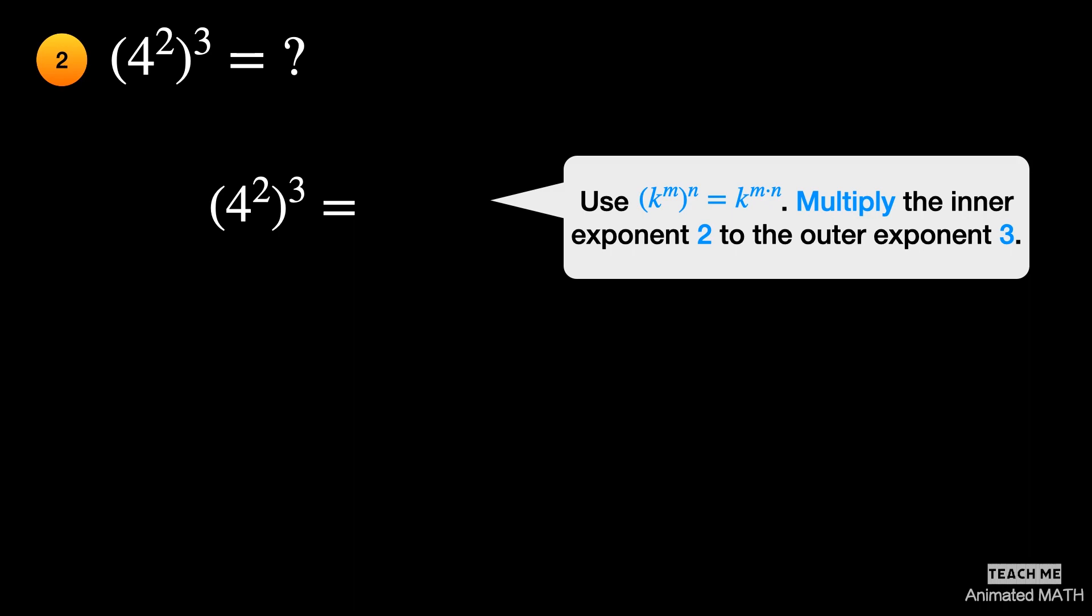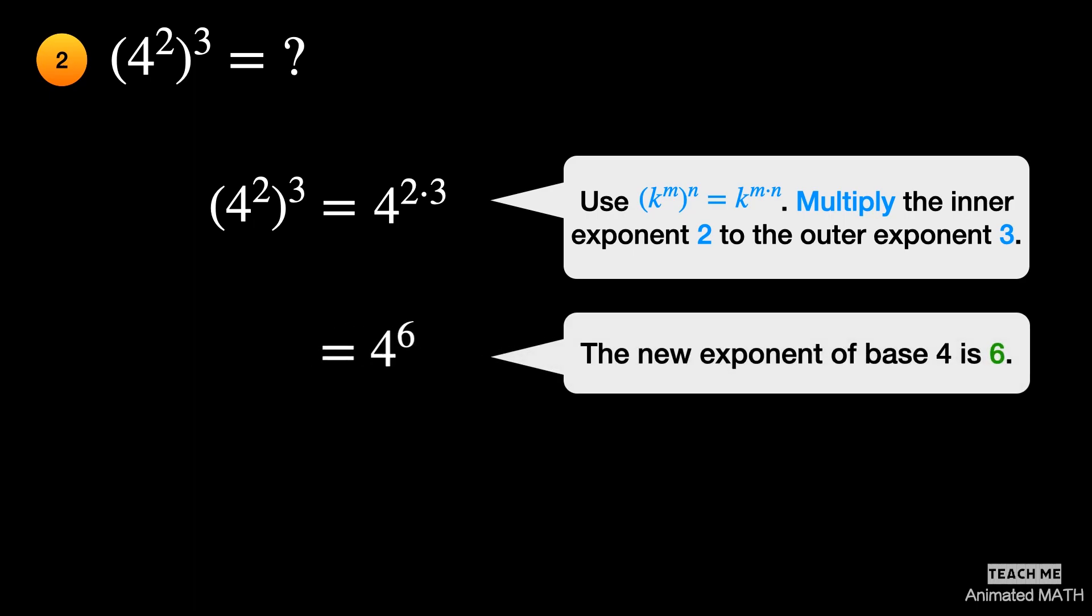Use the 7th property of exponents. Multiply the inner exponent 2 with the outer exponent 3. The final answer is 4 to the 6th power.